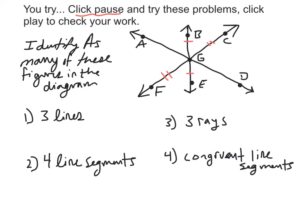Okay, now that you've had time to identify figures in this diagram, let's try finding three lines. Remember a line has to have this symbol over it. So if you're using two capital letters or two points to represent the line, you need the line symbol over it. Lines go on forever in both directions. So I could go with line AD, as long as I have the line symbol over it.